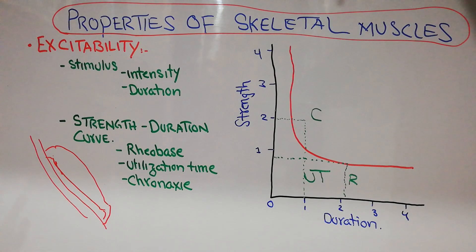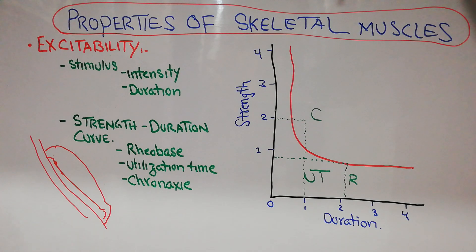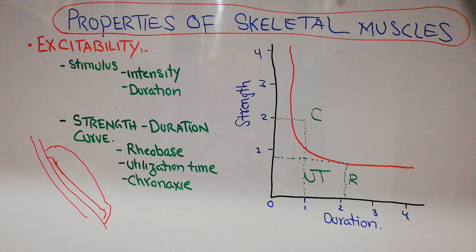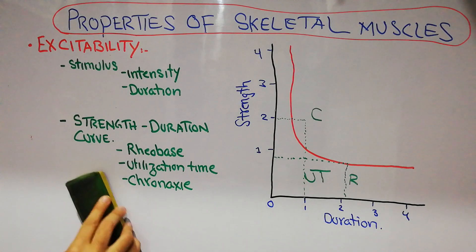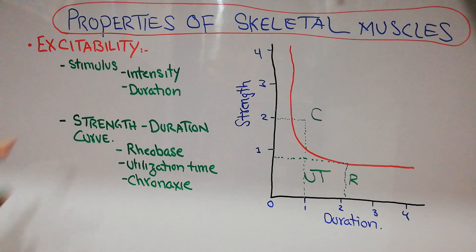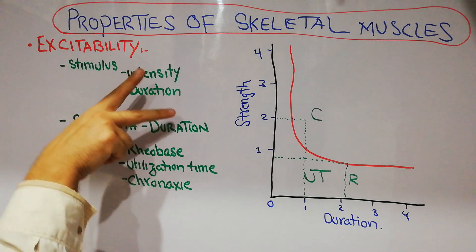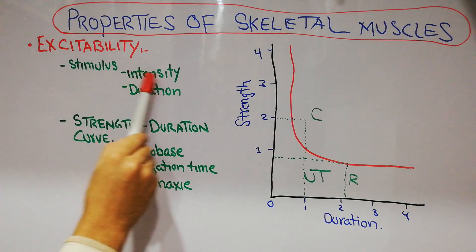The stimulus could be electrical, like an electric shock to a muscle. The change in environment could be chemical, for example acetylcholine or any chemical released acting on a muscle. The stimulus could also be thermal — a change in temperature. For example, if it is very cold, the human muscle starts shivering to produce heat. These are all responses of the muscle to changes in the environment, also known as the stimulus.